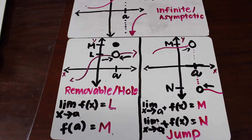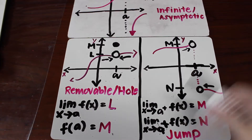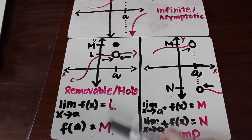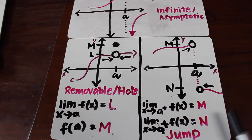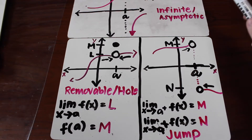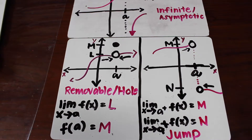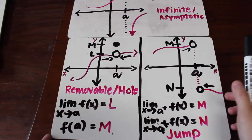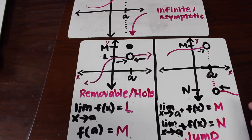So let's keep in mind that not all functions are continuous. There are three different types of discontinuities. The first one is the removable or hole discontinuity. The second is the jump discontinuity. And the third is the infinite or asymptotic discontinuity.